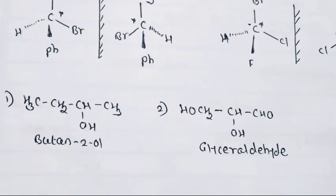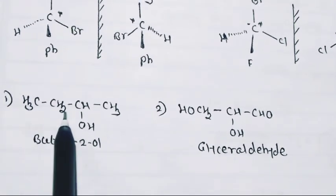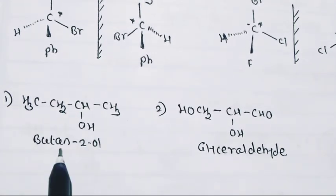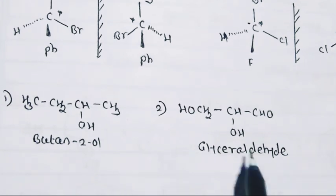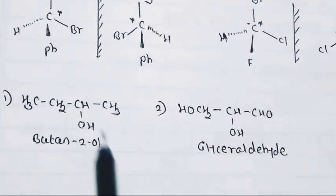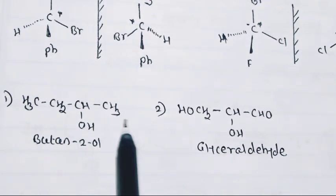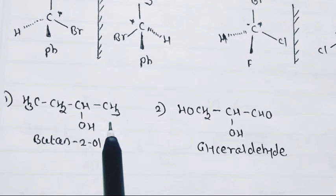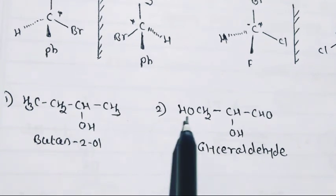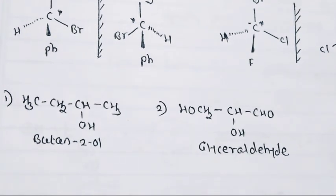Two more examples for you to solve: 2-butanol and glyceraldehyde. Solve these and write the pair of isomers for each compound.